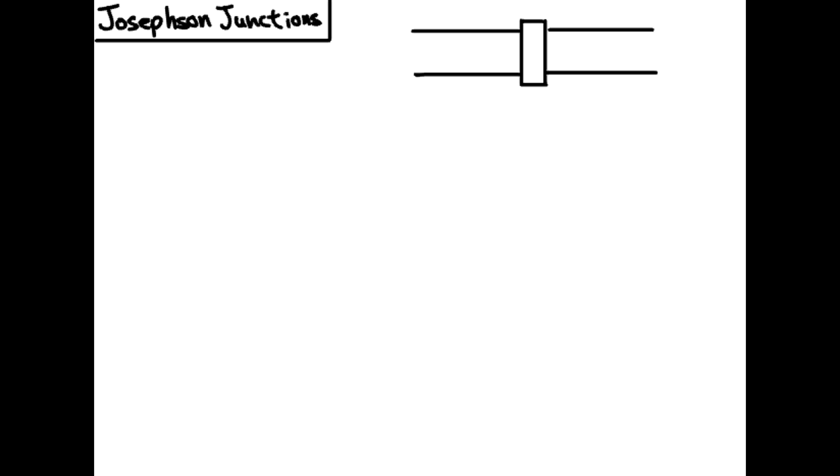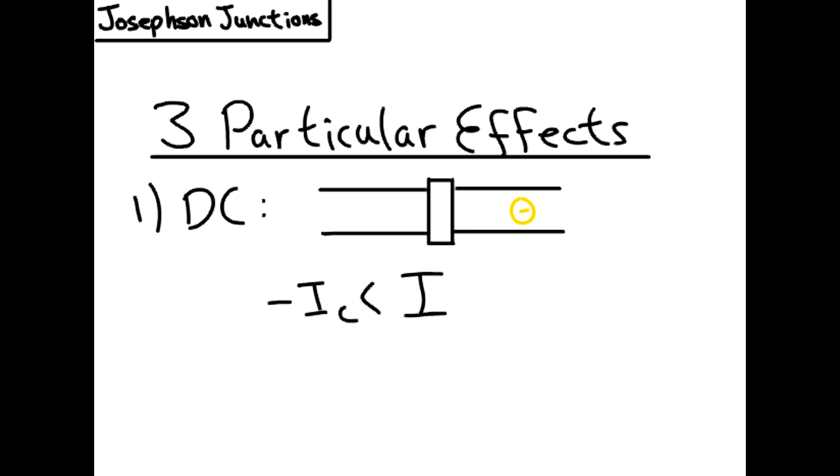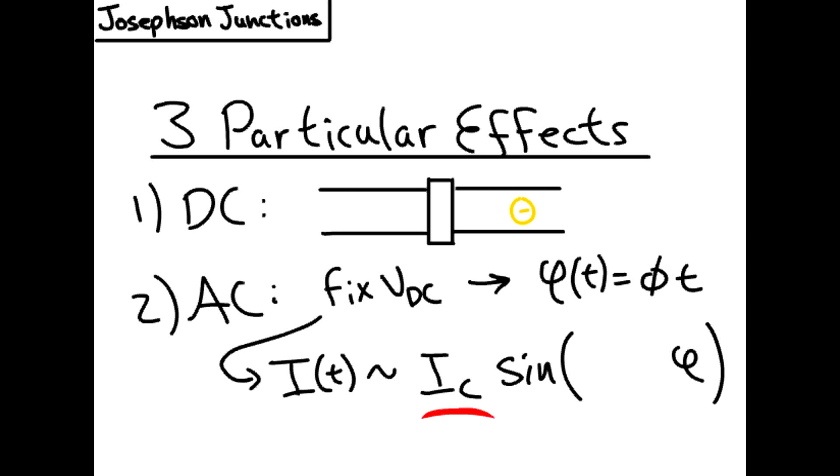The Josephson junction is known to cause three particular effects. The DC effect, which is due to the tunneling of electrons and varies between negative IC and IC. The AC effect, where using a fixed voltage causes the phase to vary linearly and the current to oscillate with a known amplitude and frequency. As such, you're able to convert voltage to frequency.